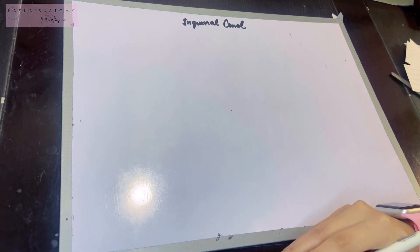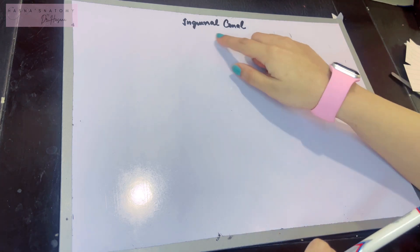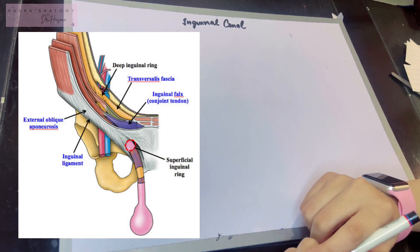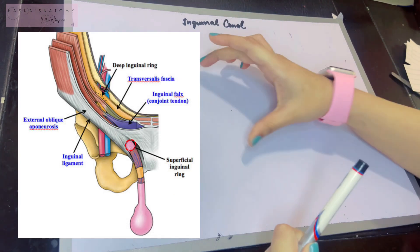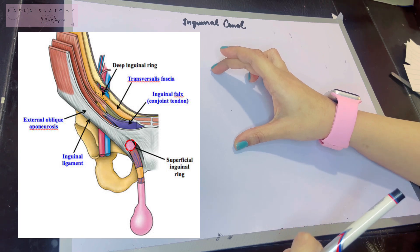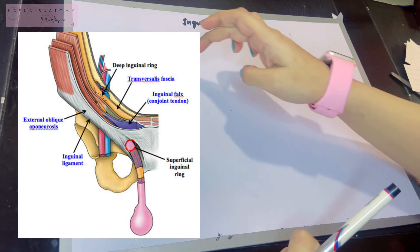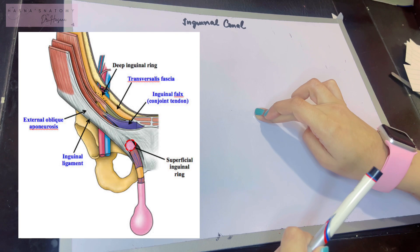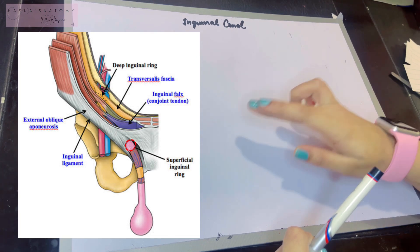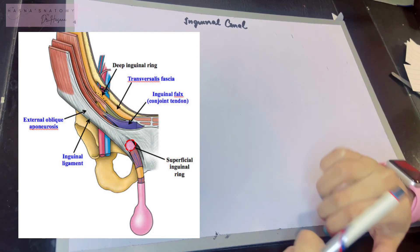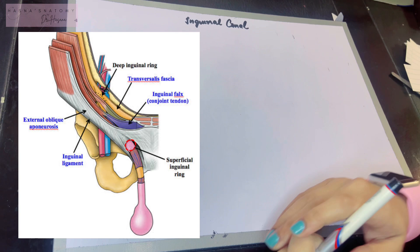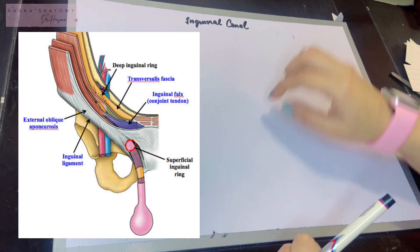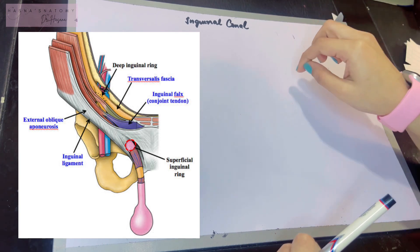Let me give you a brief revision. The inguinal canal was an oblique intermuscular passage located on the lower part of the anterior abdominal wall, running from the deep to the superficial inguinal ring, running medially just above the inguinal ligament. The content of the inguinal canal was the spermatic cord in males and the round ligament in females.